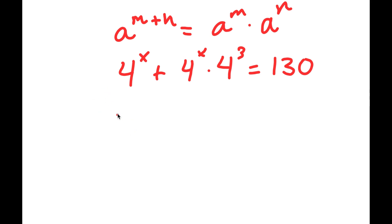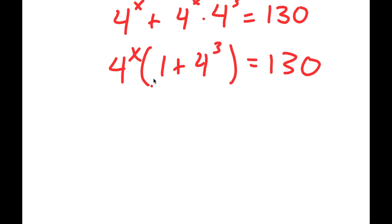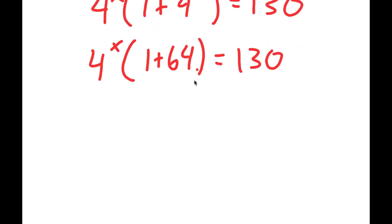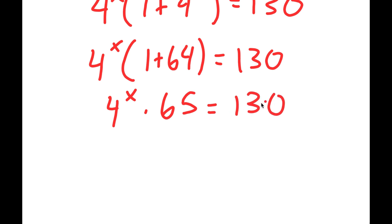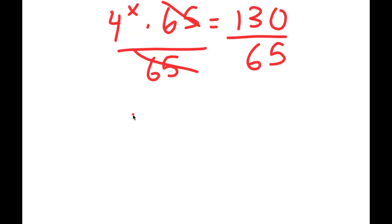Now, if I factor out 4 to the power of x, I get 4 to the power of x times the quantity 1 plus 4 to the power of 3 equals 130. And 4 to the power of 3 equals 64. So I have 4 to the power of x times 1 plus 64, which is 65, equals 130. Dividing both sides by 65, I get 4 to the power of x equals 2.